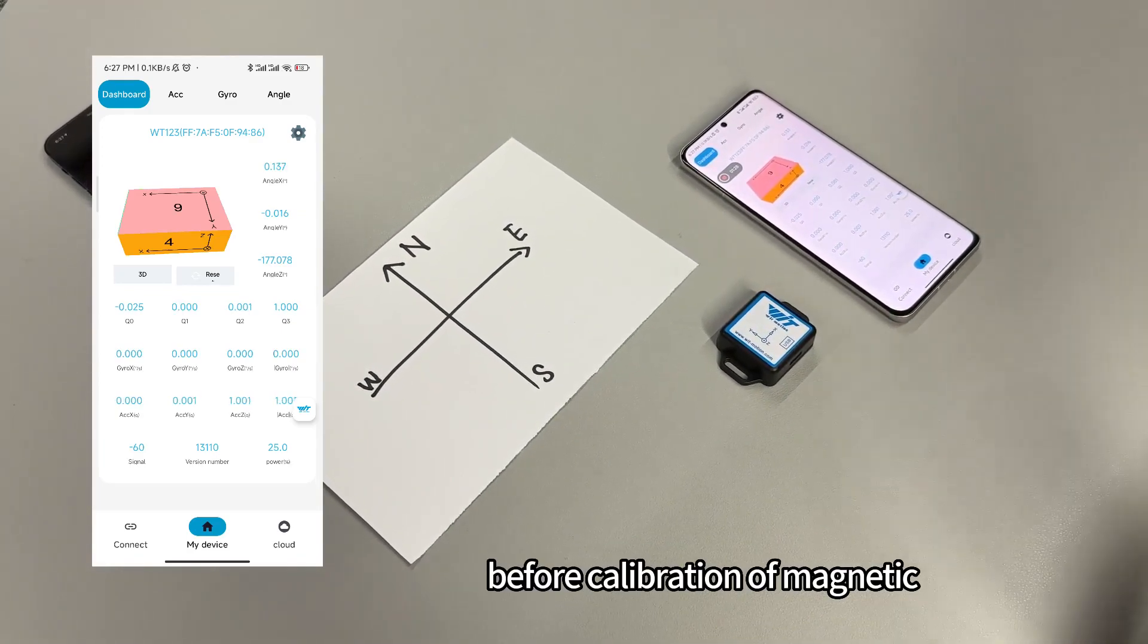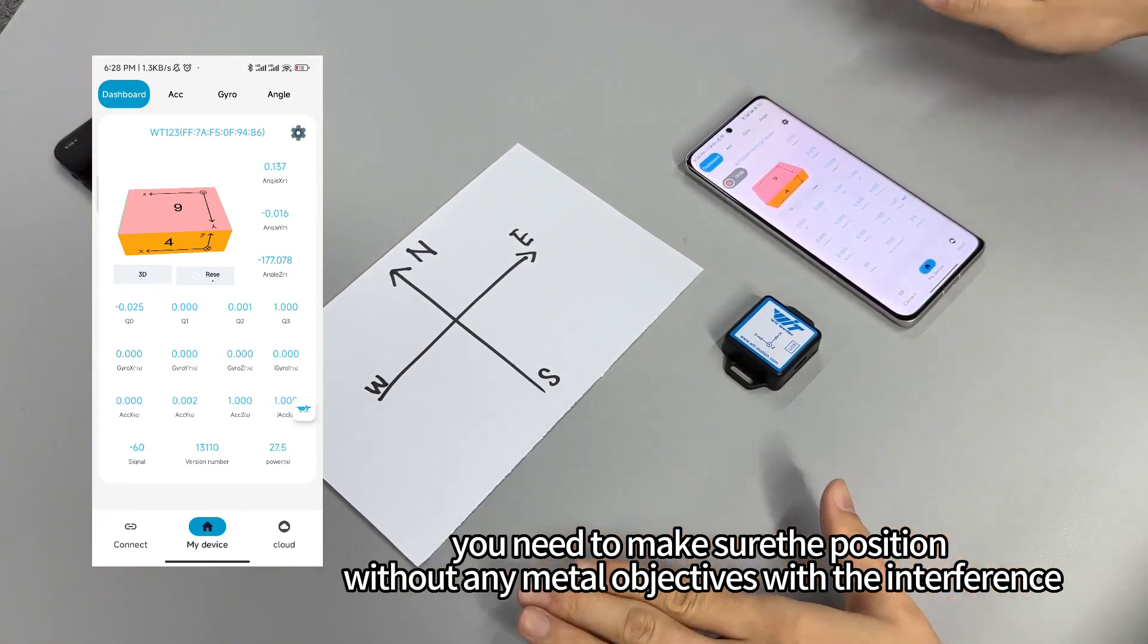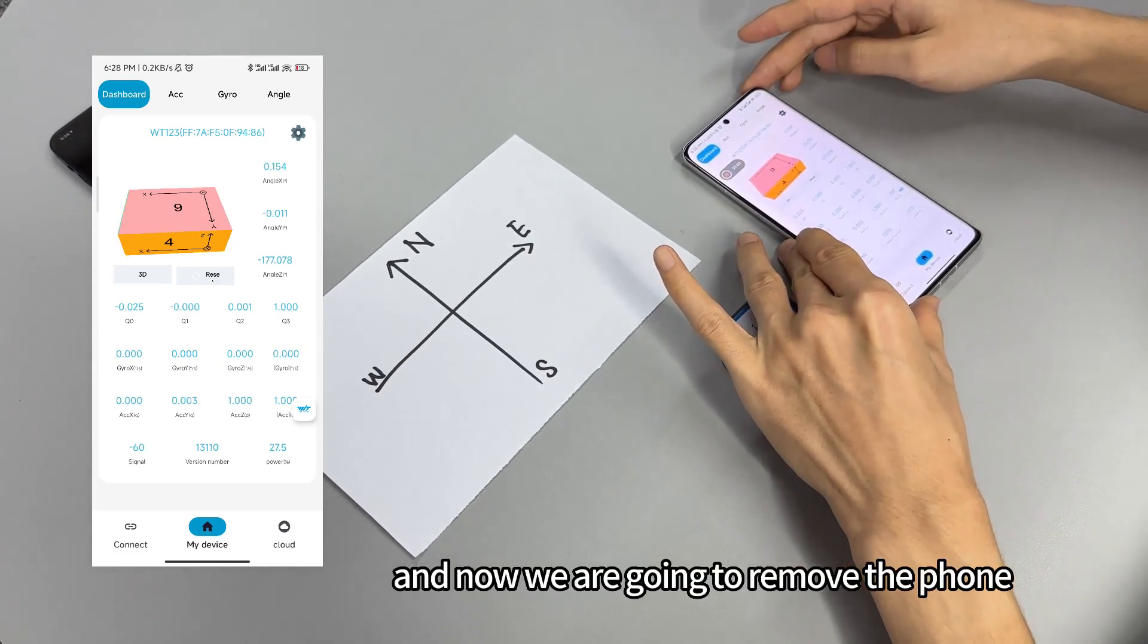Before calibration of the magnetic field, you need to make sure the position is without any metal objects that cause interference, especially like a phone. Now we are going to remove the phone.